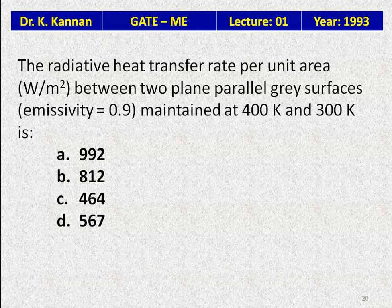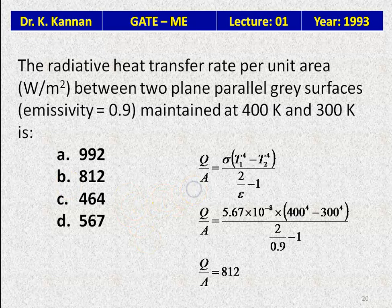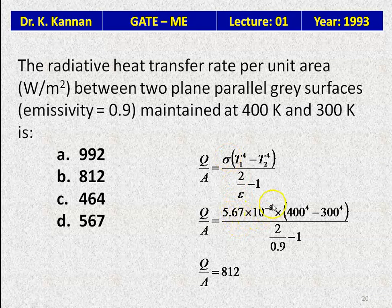Question 19: Radiative heat transfer rate per unit area (W/m²) between two parallel gray surfaces with emissivity 0.9, maintained at 400 K and 300 K — options: 992, 812, 464, 567. Using Q/A = σ(T₁⁴ − T₂⁴) / (2/ε − 1) = 5.67×10⁻⁸ × (400⁴ − 300⁴) / (2/0.9 − 1). Calculating gives 812 W/m². The answer is 812.